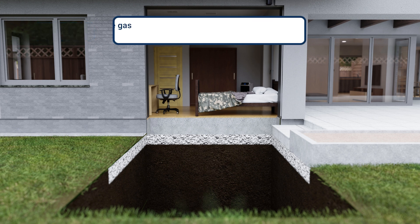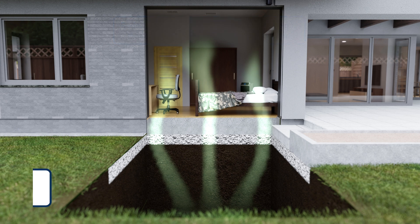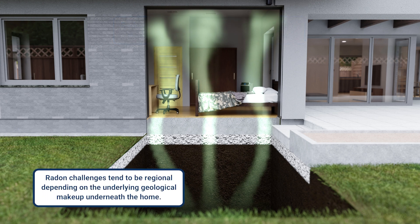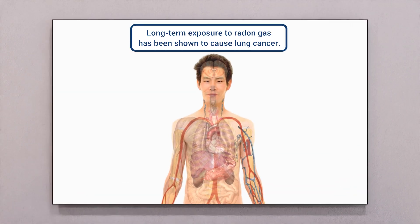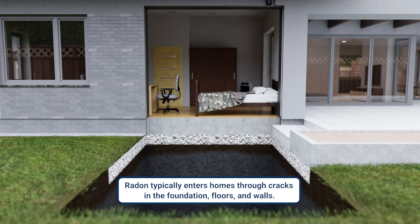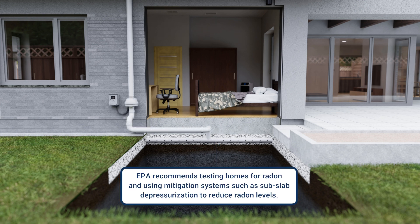Radon is a naturally occurring radioactive gas that can seep into homes from the ground. Radon challenges tend to be regional depending on the underlying geological makeup beneath the home — homes built on granite tend to have more issues with radon, but other types of underlying geographies can also lead to radon. Long-term exposure to radon gas has been shown to cause lung cancer. Radon typically enters homes through cracks in the foundation, floors, and walls. The EPA recommends testing homes for radon and using mitigation systems such as sub-slab depressurization to reduce radon levels.